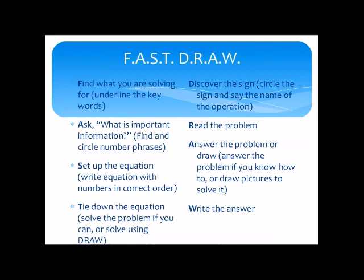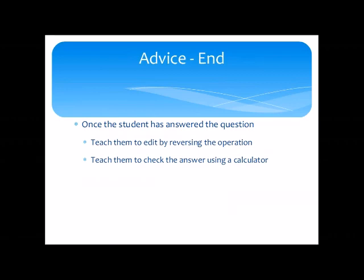I want to talk a little bit about mnemonics as a tool — and don't get me wrong, I love a mnemonic — but this particular FAST-DRAW mnemonic is eight steps and relies on phonemic awareness, which may be impaired for some students. It also has a heavy load on language, literacy, and memory, with embedded knowledge describing what to do at each step. So each step is really a multi-step, and if this is going to be successful, it has to be practiced a lot. Once the student has answered the question, teach them to edit by reversing the operation and checking their answer using a calculator.